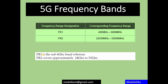3GPP is a combination of seven development organizations working together: ARIB and TTC from Japan, TSDSI from India, ETSI from Europe, CCSA from China, ATIS from the USA, and TTA from Korea. These organizations produce the reports and specifications that define any 3GPP technology, so all of society and every country can take benefit from them.